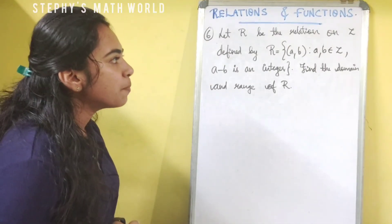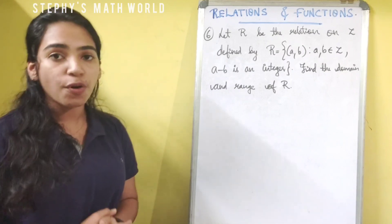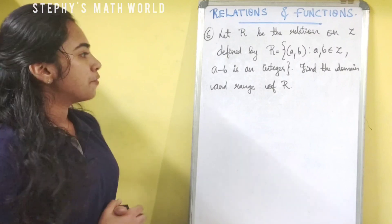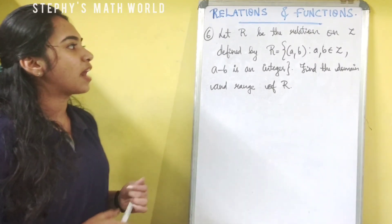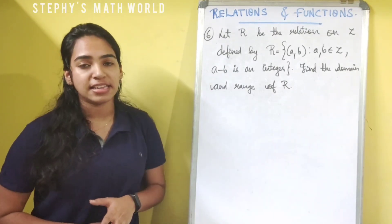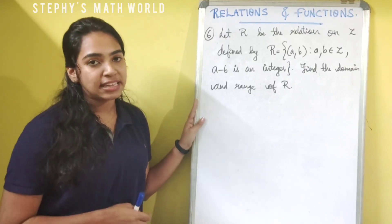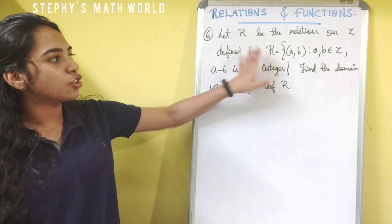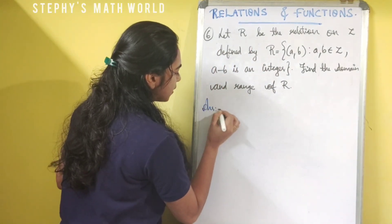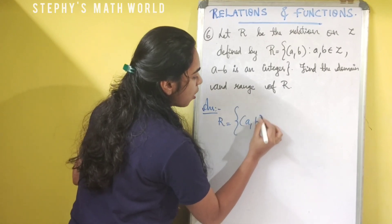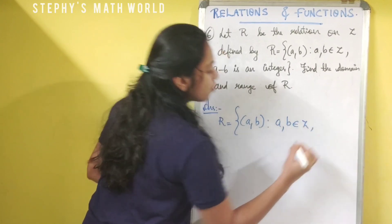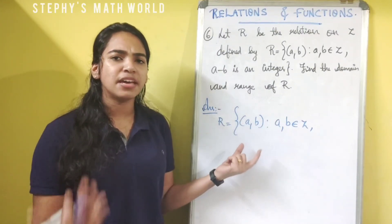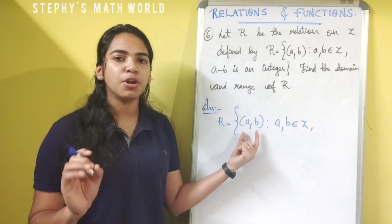The next question: Let R be the relation on Z defined by R equal to the set of all ordered pairs (A, B) such that A and B belong to Z, and A minus B is an integer. Find the domain and range of R. R is the relation on integers, and we represent A and B as integers.